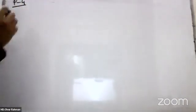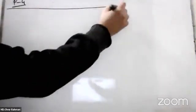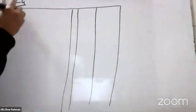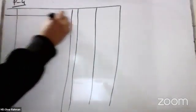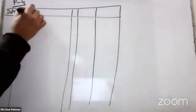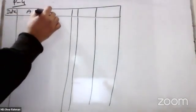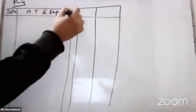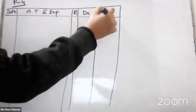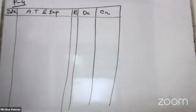I got the general journal here. The format includes: date, account title and explanation, reference, and debit.